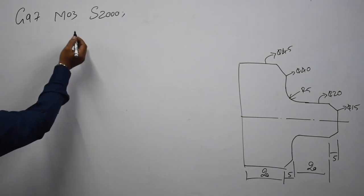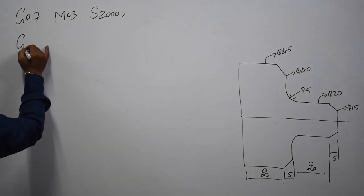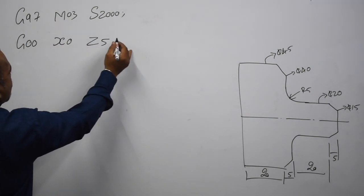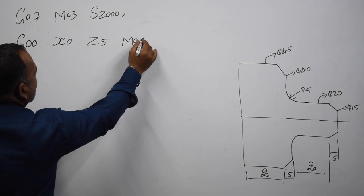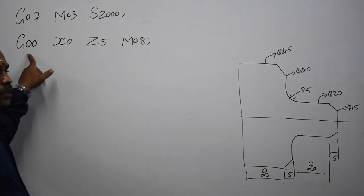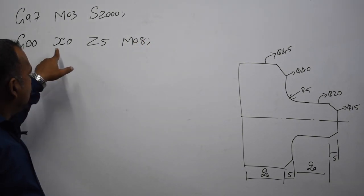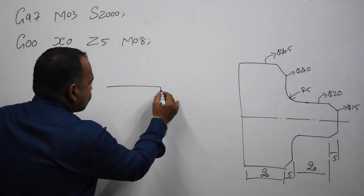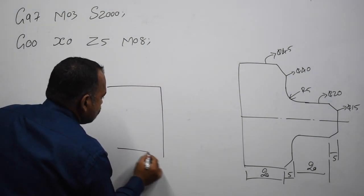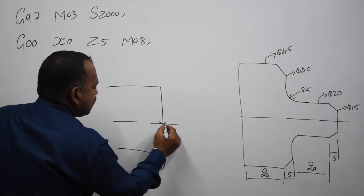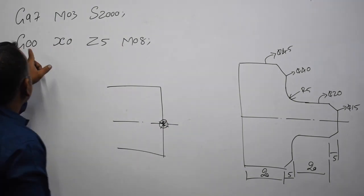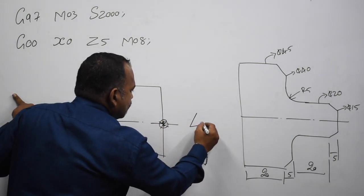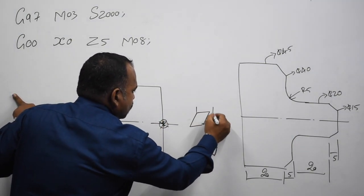Next. G00, X0, Z5, M08. G00 is a rapid movement. X0, Z5 is a rapid movement to position. The reference point and origin point are here. G00, X0, Z5 positions the tool. Do you understand?